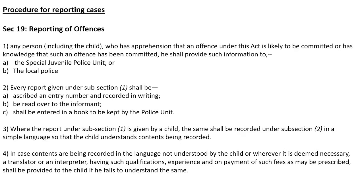Procedure for reporting cases — Section 19: if any person, including the child, is likely to know that an offense is about to be committed or has knowledge that an offense has been committed, they shall provide information to the special juvenile police unit or the local police. The report under subsection 1 shall be in writing, be readable, and shall be entered in the book kept by the police unit. If the report is being given by a child, it shall be written in simple language so the child can understand it. If the report is in a language the child cannot understand, a translator or interpreter with required qualification and experience shall be appointed on payment of fees.